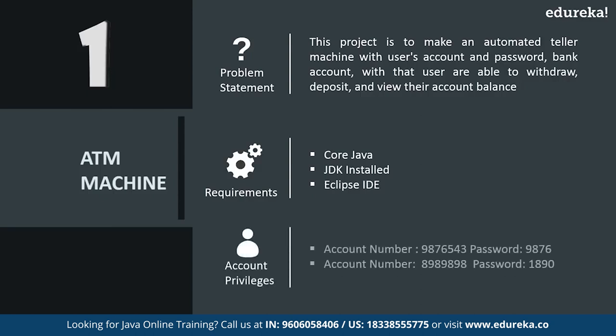I have set the privileges for account number and password. You can see on the screen that I have given two account numbers and passwords. When running the code, if you enter the account number and password as mentioned on the screen, only then can you perform further operations; otherwise it will display a message saying wrong account number or pin. Now let's see how it works and how the code is being developed.